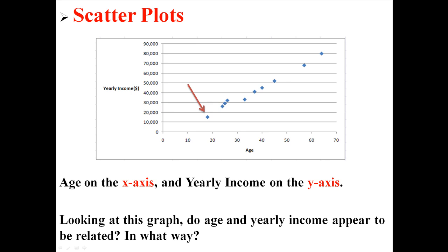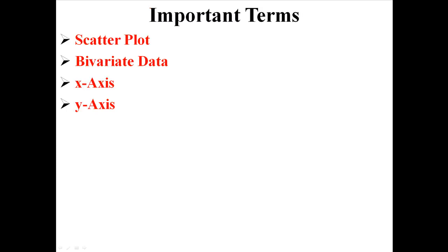Just based on what this scatterplot is telling us, there seems to be a relationship between these two variables in that as one increases, the other increases as well. We're not going to go much further beyond that now — just realize that's a way of representing bivariate data in a scatterplot.